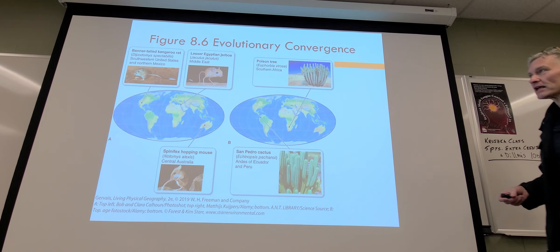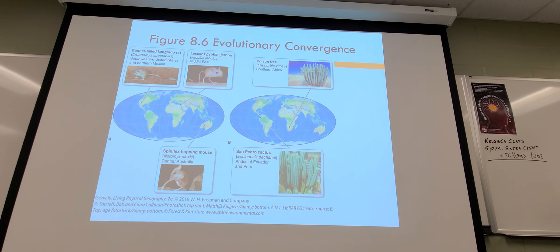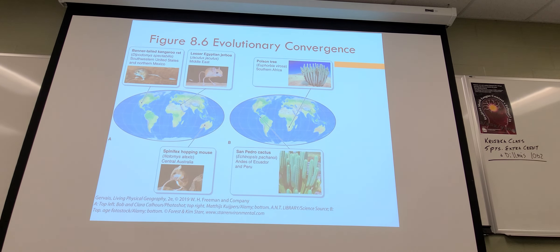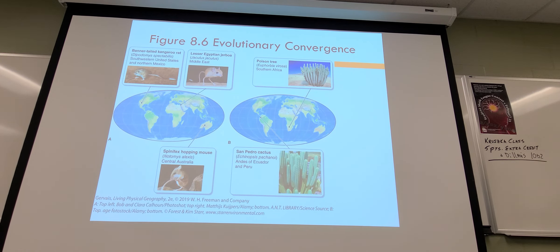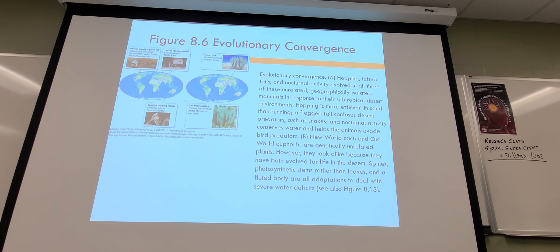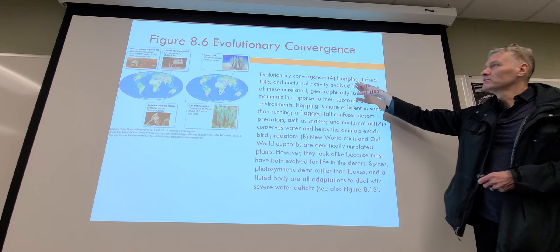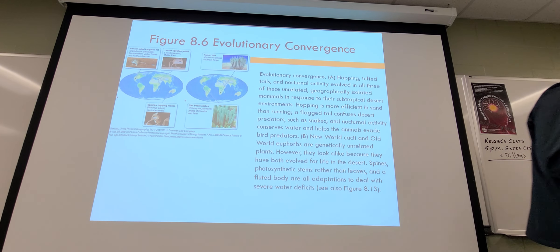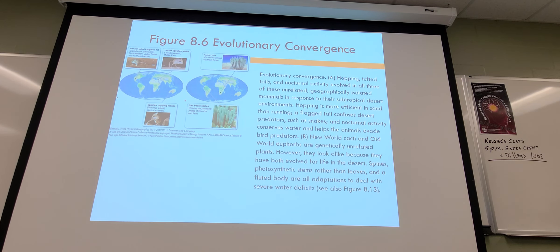An example of convergent evolution: hopping animals. Hopping might not seem like the most productive way to move across Earth's surface, but in environments with lots of sand it helps you get through faster. Plants also adopt very similar mechanisms — that's why you see cactus-like plants around the world that aren't actually related to each other but develop similar strategies to conserve their water budgets. Other desert adaptations include tough tails and nocturnal activity — just don't go out when it's sunny.